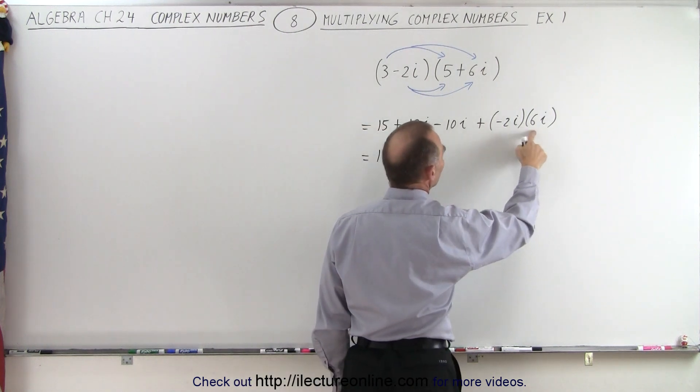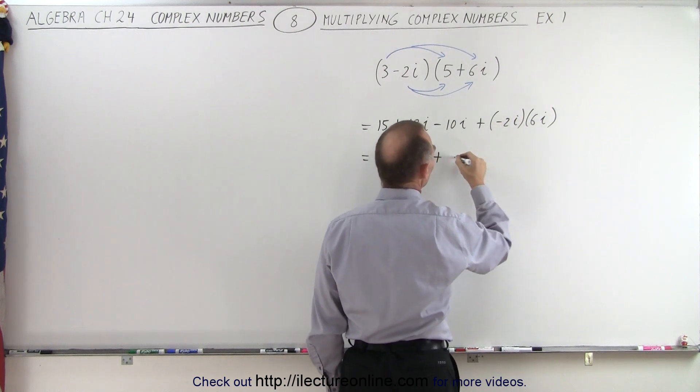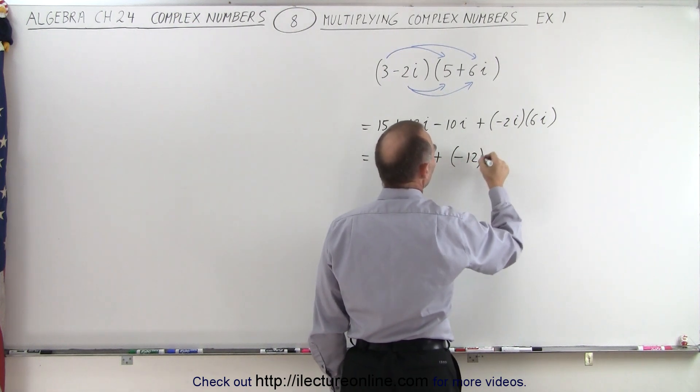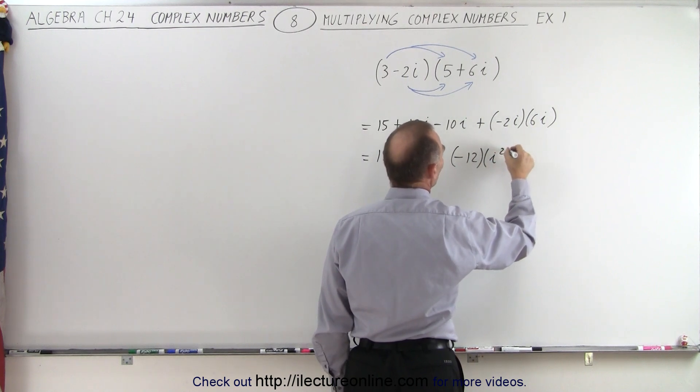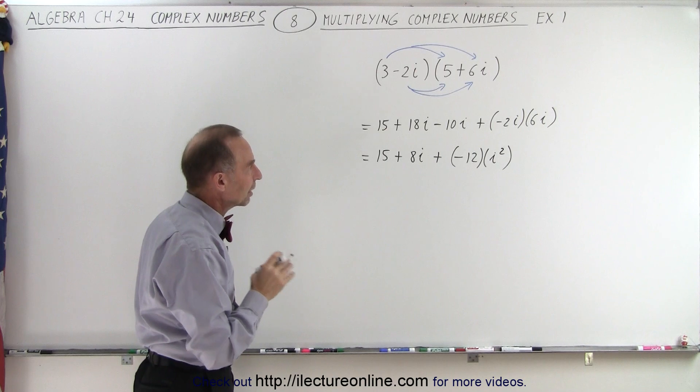but now we have the product of these two right here. So in essence, we have negative 2 times 6, which is negative 12. And then we have an i times i, which is i squared. So let me write it like that as an intermediary step.